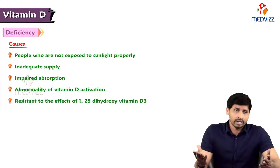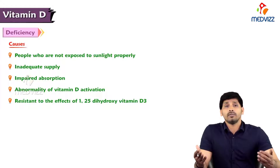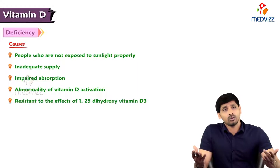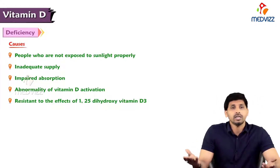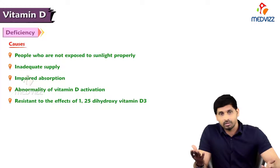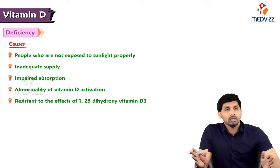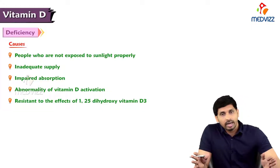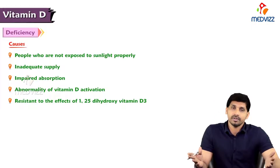When we get exposed to sunlight, the 7-dehydrocholesterol present in our skin undergoes photolysis to make cholecalciferol. This cholecalciferol is transported in circulation, reaches the liver and kidney, and gets activated. Ample sunlight is required to maintain adequate vitamin D levels. People not exposed to sunlight properly may become deficient in vitamin D and develop severe bone disorders.